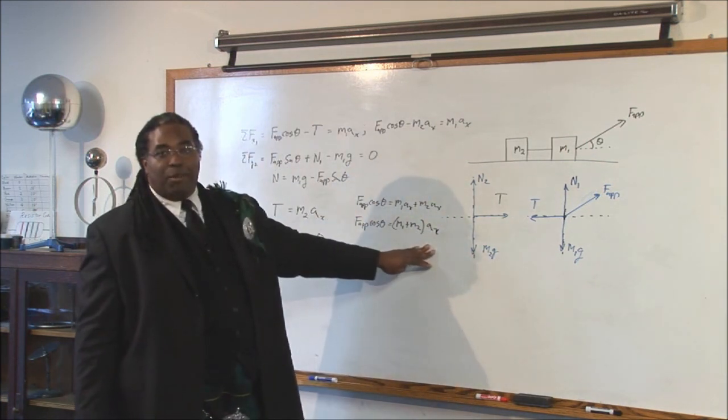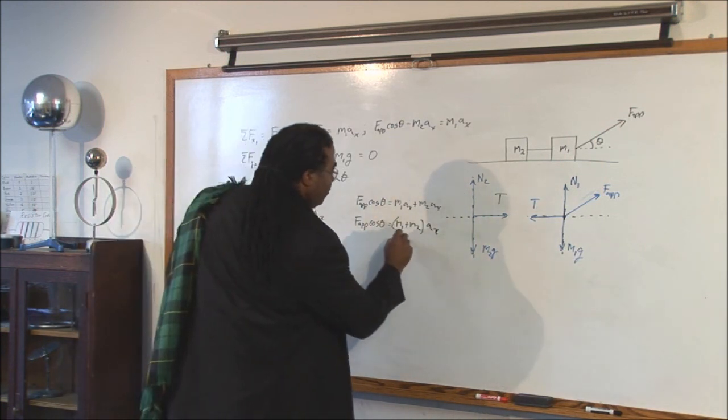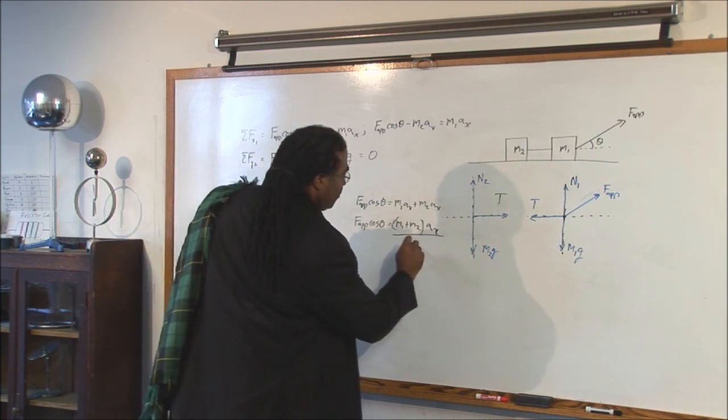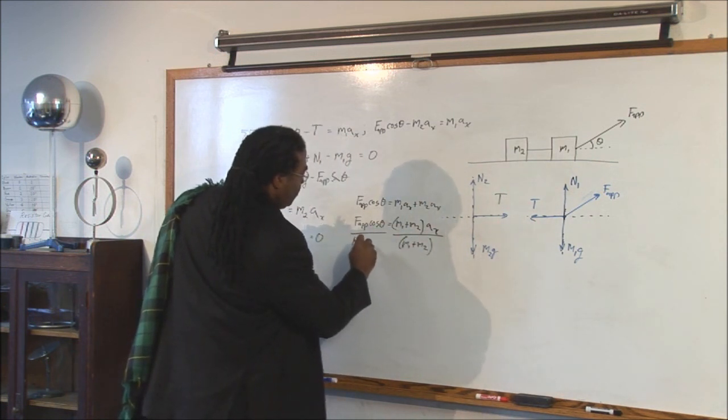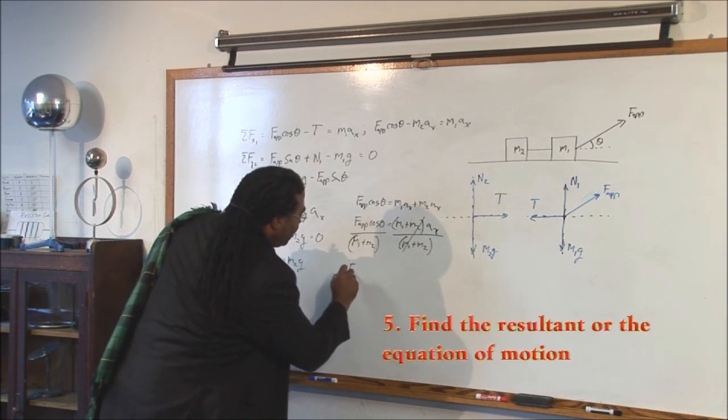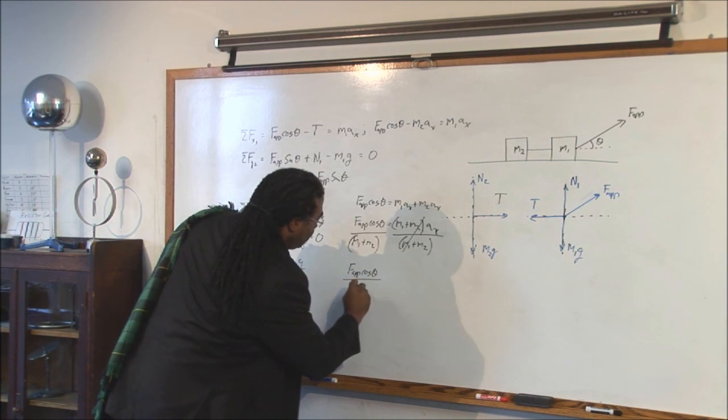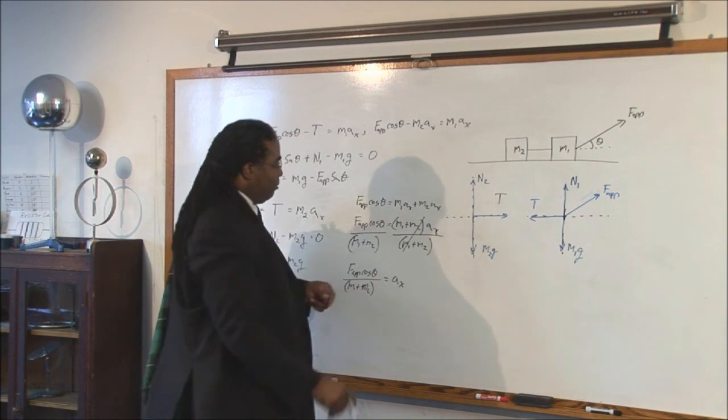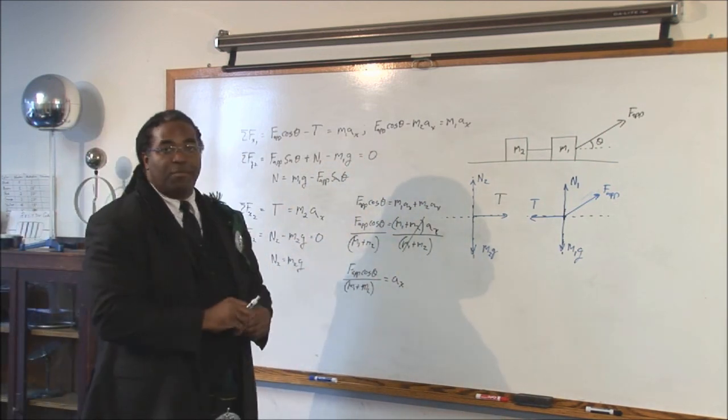Now all we have to do is divide both sides by M one plus M two to get a by itself. These cancel out and your final answer is F applied cosine theta divided by M one plus M two equals the acceleration along the x axis. This is your equation of motion.